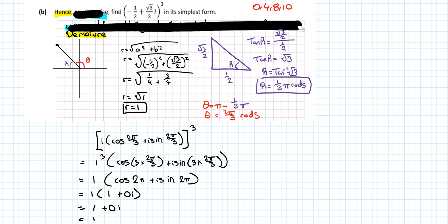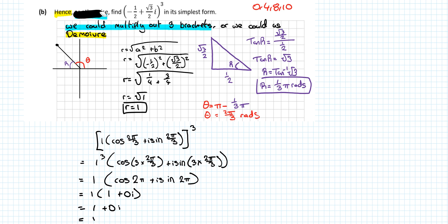So you could multiply out three brackets. The reason I'm saying three brackets is because it's to the power of three — you could have this bracket by itself three times. It would take a bit of time, but they really want you to use De Moivre's theorem and there's no point not using it.